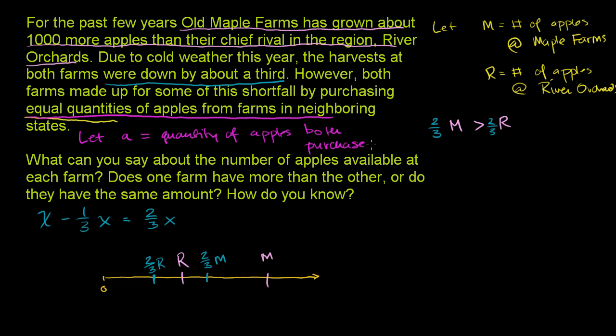So they're telling us that they both purchased the same amount. So we could add A to both sides of this equation. It will not change the inequality. As long as you add or subtract the same value to both sides, it will not change the inequality. So if you add A to both sides, you have A plus 2/3 M is greater than 2/3 R plus A.